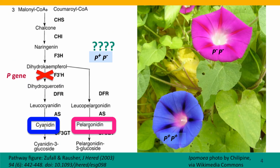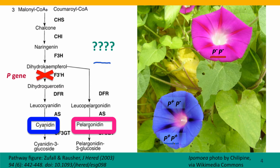Here are our pink morning glory flowers. Here's the pathway again — when the P gene is knocked out, the homozygote has pink flowers instead of the normal blue flowers. What's the phenotype of the heterozygote? That genotype has one plus allele and one minus allele. The phenotype is the same as the wild-type homozygote, so both of these genotypes have the same phenotype.